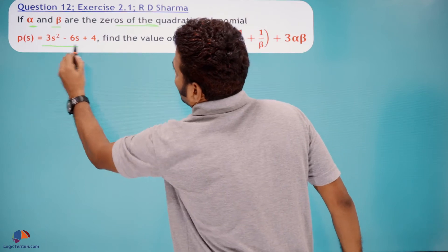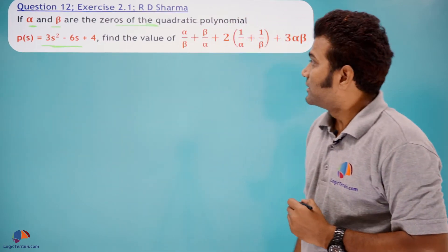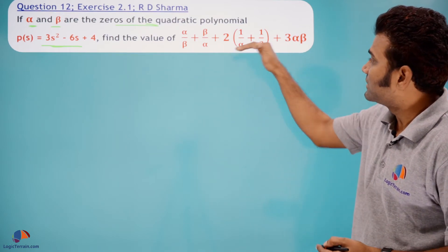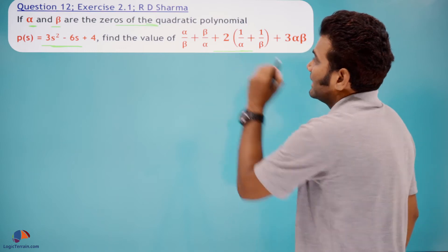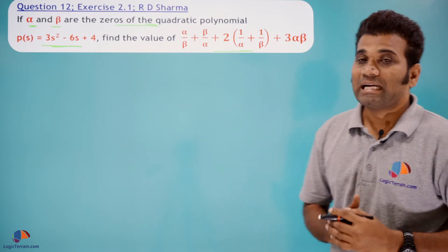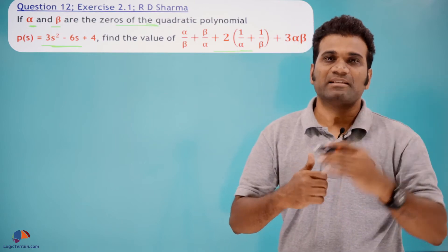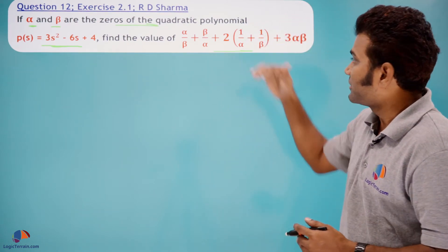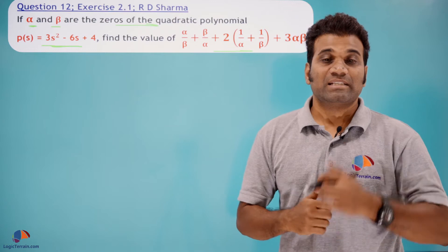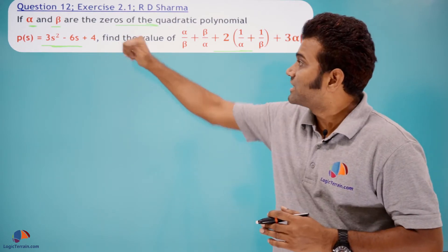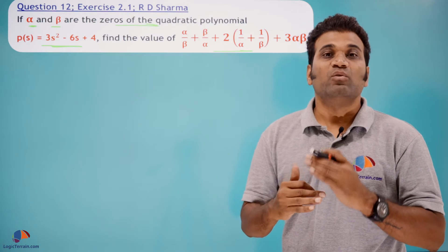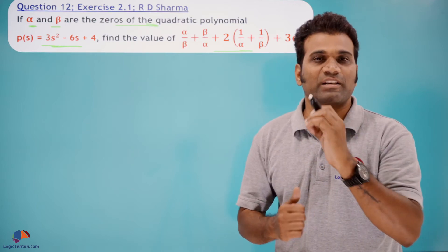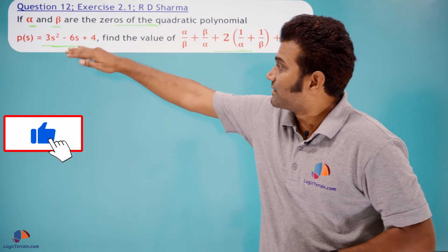Here we are given that alpha and beta are zeros of this quadratic polynomial, so using these roots we have to find the value of this expression, which is entirely in alphas and betas. To do that, recollect the previous concepts — since we don't have alpha and beta directly, we use the relation between zeros of a polynomial and coefficients of the quadratic polynomial, that is the sum of zeros and product of zeros.